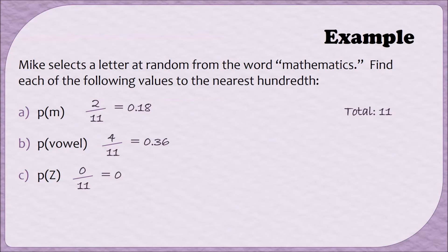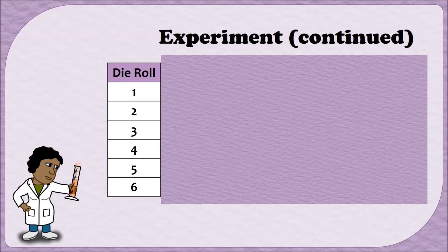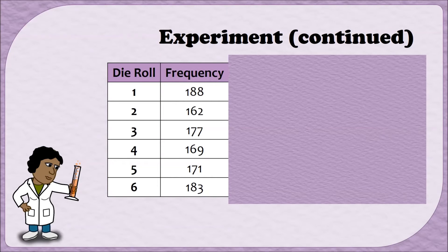Now that we've had some practice in finding probabilities, let's return to our experiment. You were asked to roll a die a total of 30 times. Do you think there would be a difference if you were to roll the die a hundred times, a thousand times, or a hundred thousand times? How do you think the proportions, or relative frequencies, would change the more often you repeat the experiment? I pooled together the results of several students who rolled a die, and we found a total of 1,050 rolls.